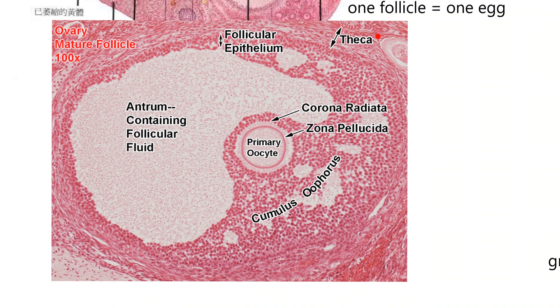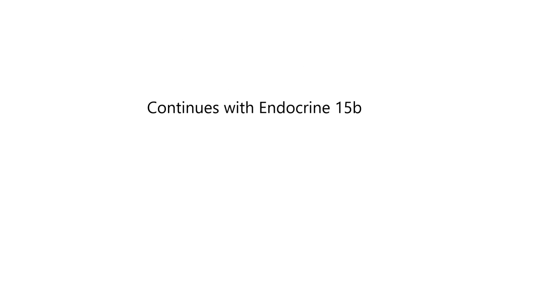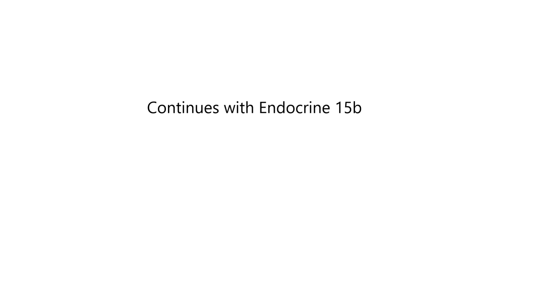I want to point out the theca layer — that's on the outside of the follicle, on the outside of the follicular wall. Inside the follicular wall is another group of tissue cells called granulosa cells. This is really important because the theca cells make a hormone, and the granulosa cells — I'm going to tell you two hormones made by those cells. Before I get to the endocrine material on the ovary, we need to continue with endocrine 15b. The file got way too big, so go there.